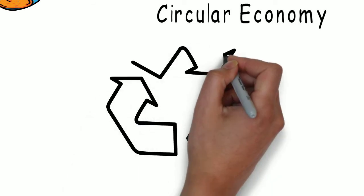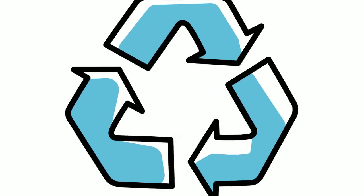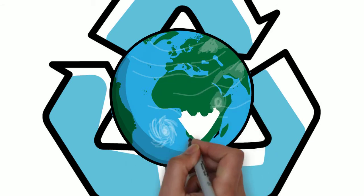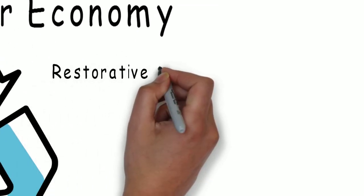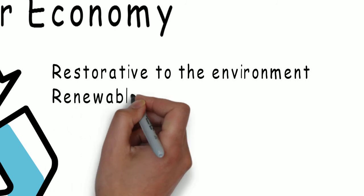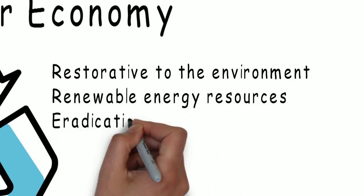This follows what is called a circular economy, which illuminates the unsustainable premise that our society is built on today. Backed by the three R's, it aims to be restorative to the environment, use renewable energy resources, and eradicate waste through careful design.